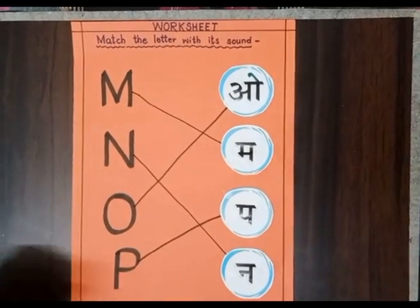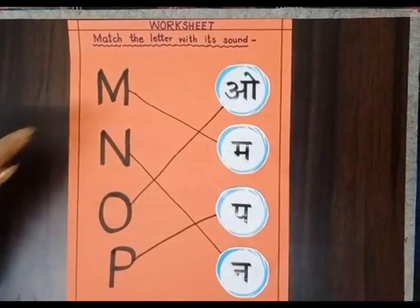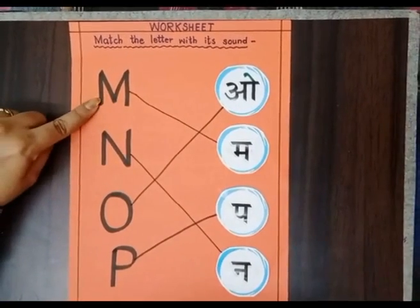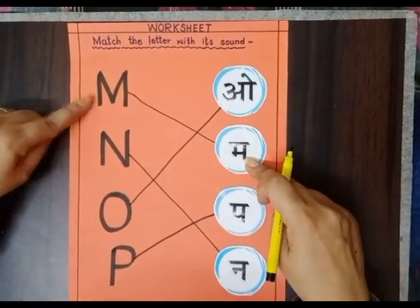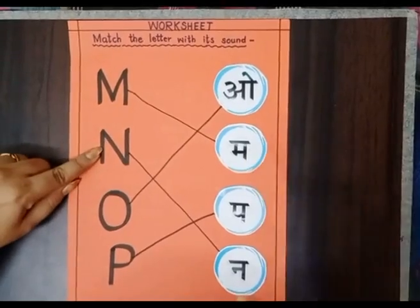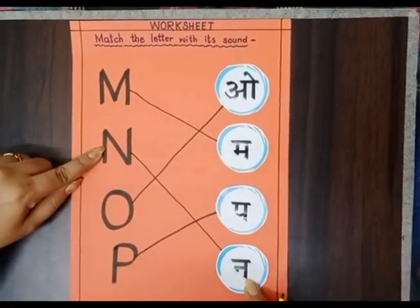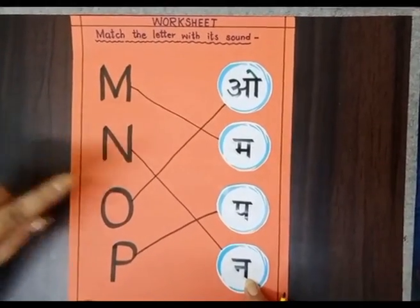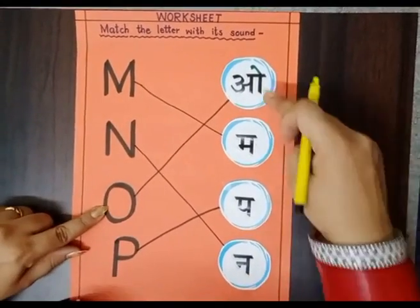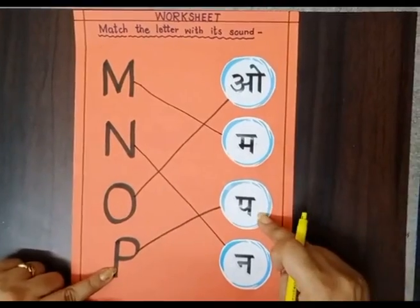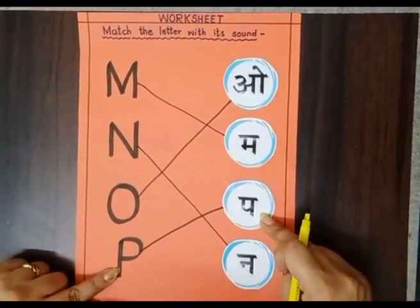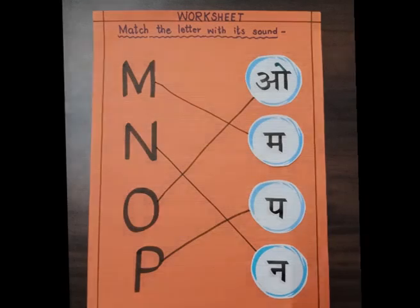Let's revise one more time. M, mango. N, nose. O, octopus. P, parrot. So my dear kids, in this way you have to make a worksheet and match the letter with its sound.